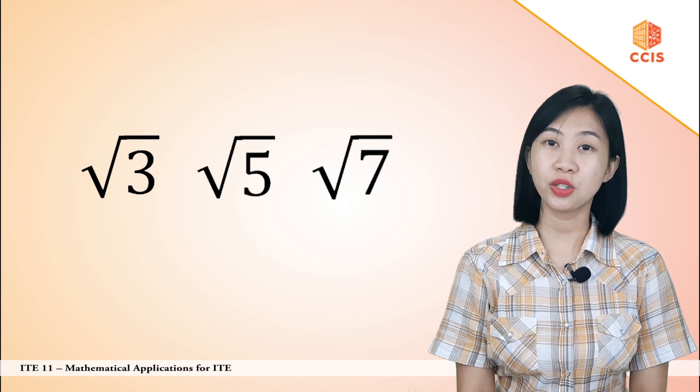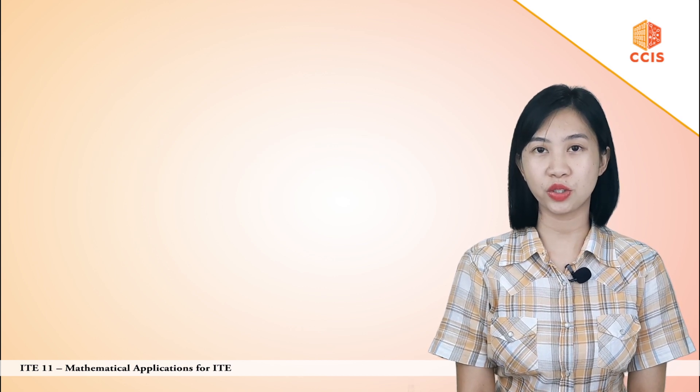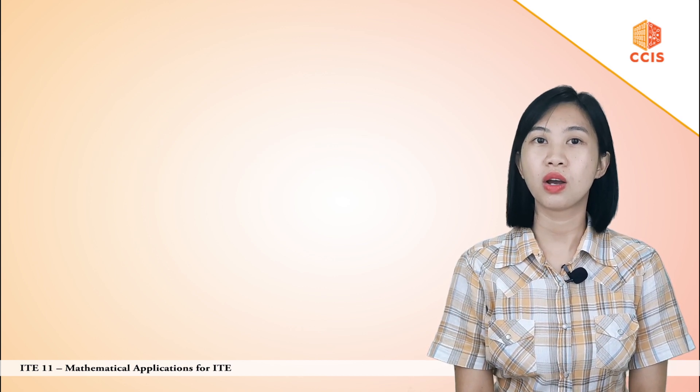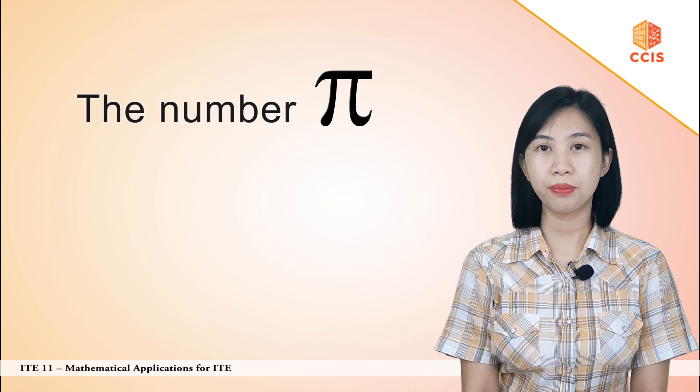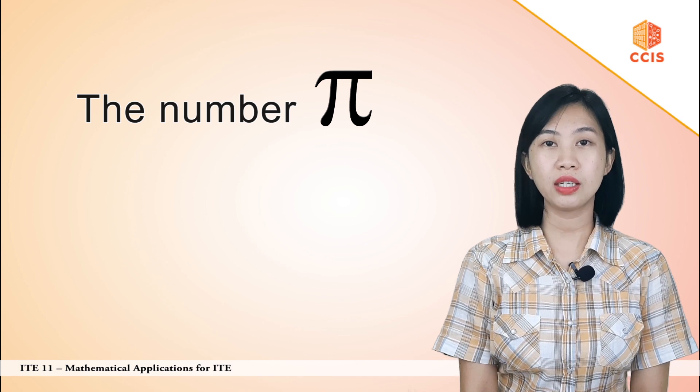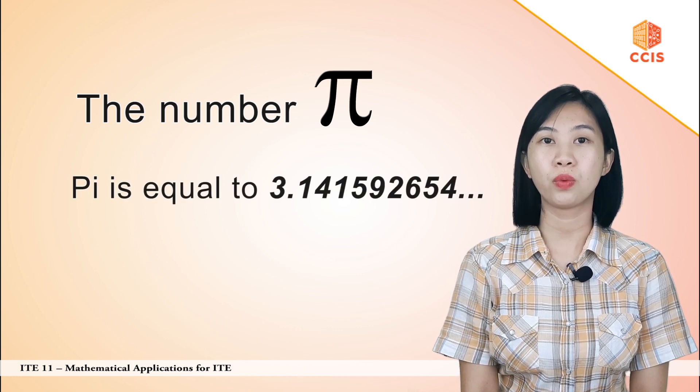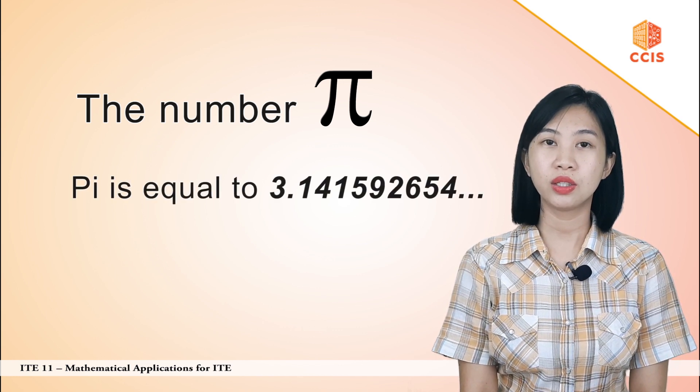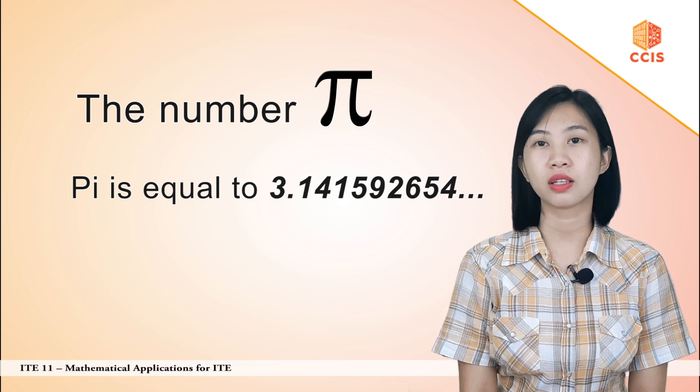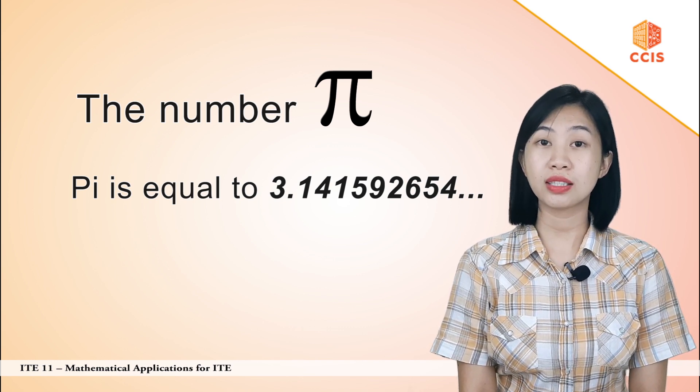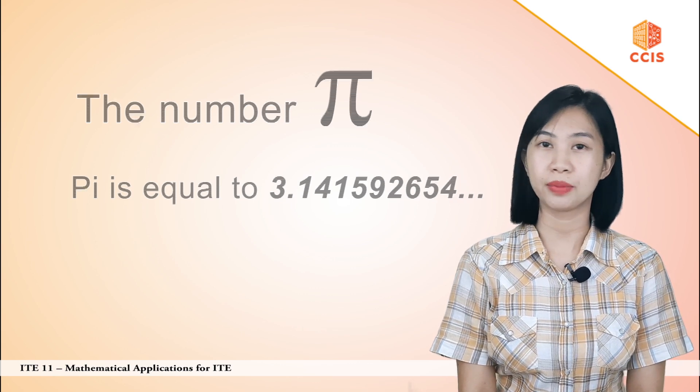If rational numbers either repeat or terminate, irrational numbers don't. One very famous example is pi. Pi is equal to 3.141592654, and so on, wherein the number does not repeat, nor does it terminate.